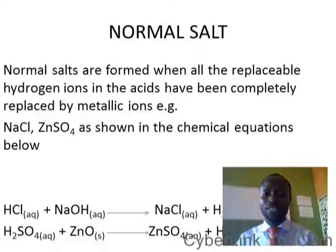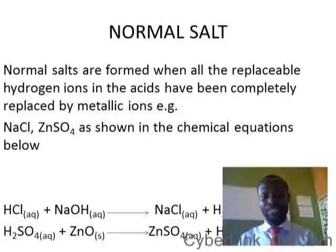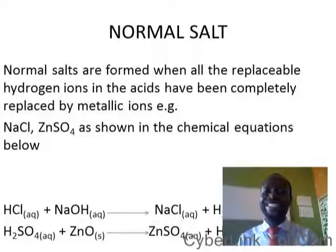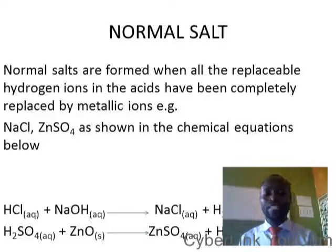Now let us continue under types of salt. Normal salts are formed when all the replaceable hydrogen ions in the acid have been completely replaced by metallic ions. The reason is because there is no form of hydrogen here.